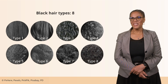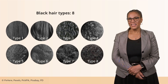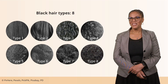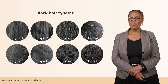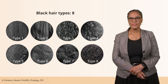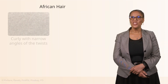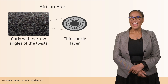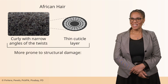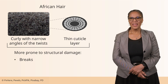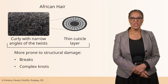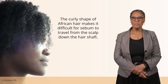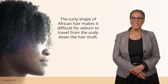What are the classifications of black hair types? A study by Lawson looked at hair types from type 1 to type 8, with type 8 being the most curly and coily compared to type 1, which is straight. Focusing on African hair, it tends to be curly with narrow angles of twists, has a thinner cuticle layer, and these two features make it more prone to structural damage and breakage, as well as the formation of complex knots and a high prevalence of longitudinal splits. The curly shape also makes it difficult for sebum to travel from the scalp down the hair shaft.